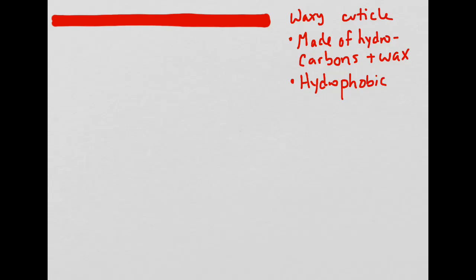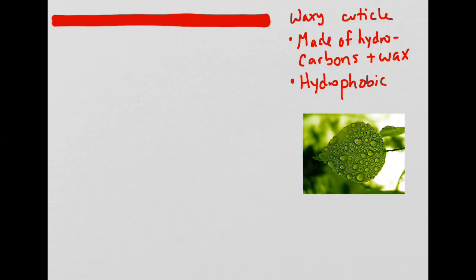The cross-section of the leaf is arranged in layers from the top to the bottom. The uppermost layer is called the waxy cuticle. The cuticle is made up of hydrocarbons and wax. This makes it hydrophobic, meaning that it repels water. Its hydrophobic nature is what causes water droplets to bead on a leaf rather than soaking in.